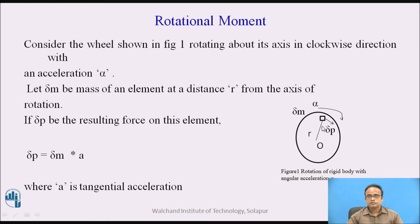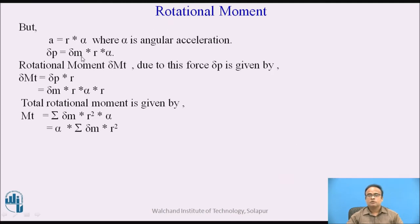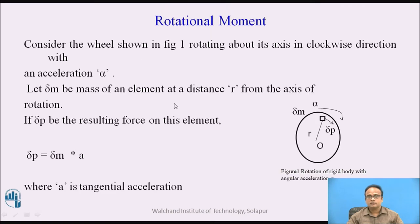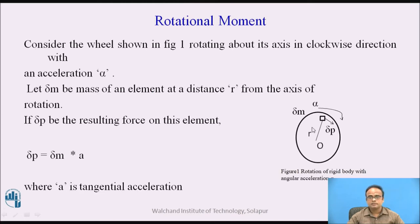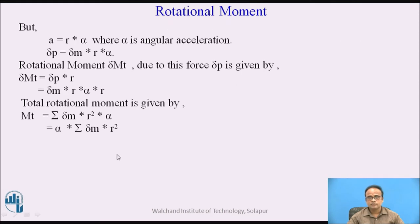As we know, force is nothing but mass into acceleration. So the resulting force can be obtained as delta m into a, where a is the tangential acceleration. We know the relation between linear and angular motion: a is equal to r into alpha, where alpha is the angular acceleration and a is the linear acceleration. So we put the value of a as r into alpha, giving us delta p is equal to delta m into r into alpha.